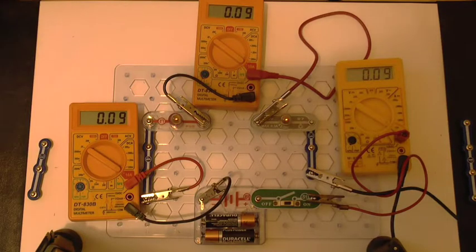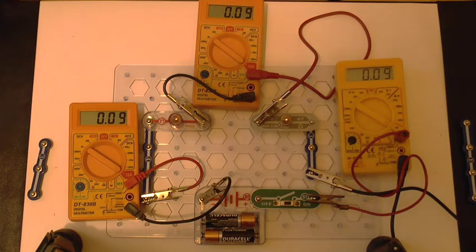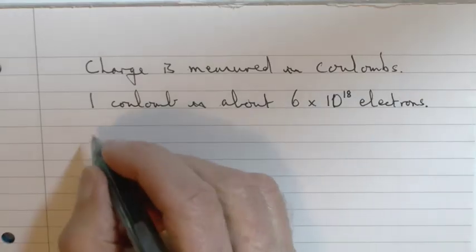We measure electric current in amps with an ammeter. An ammeter has to be inserted into the circuit so all the current flows through it, as is the case with these three ammeters, all of which read the same because the same current flows all the way around a series circuit.